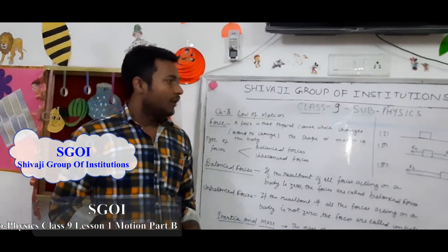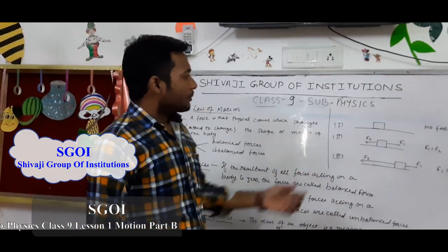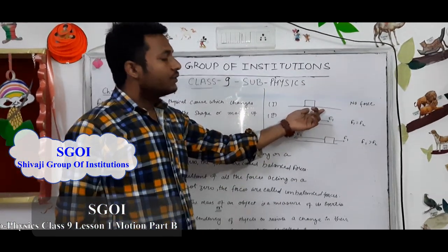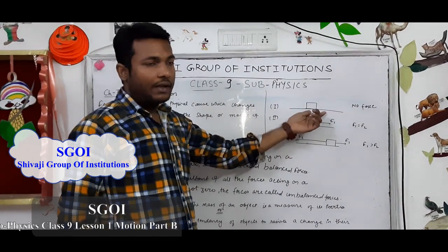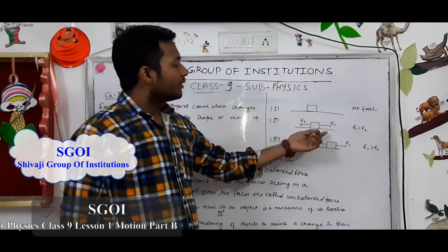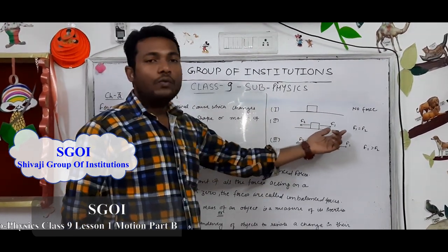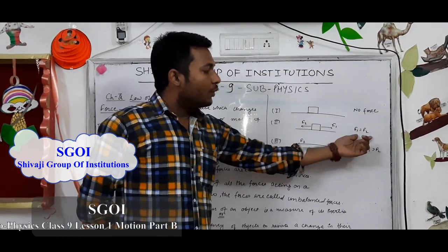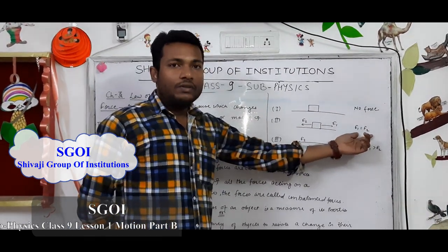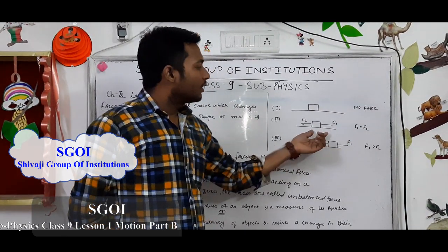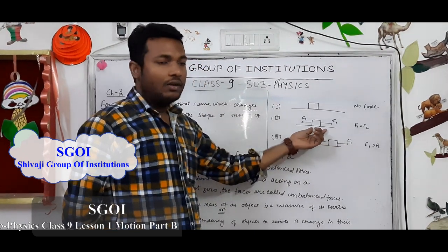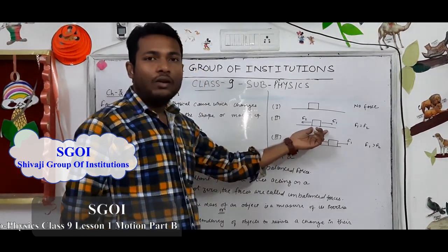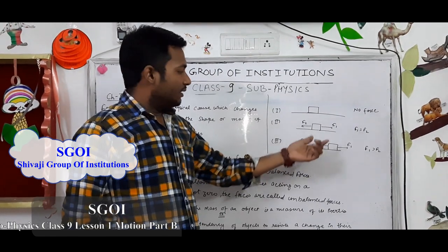Let's see the example of forces. There is a body kept on a surface with no force acting on it. In the second condition, there are two forces acting on the body and the magnitude of both forces are the same, so the body is in a rest condition and is not in motion. This is an example of balanced forces.